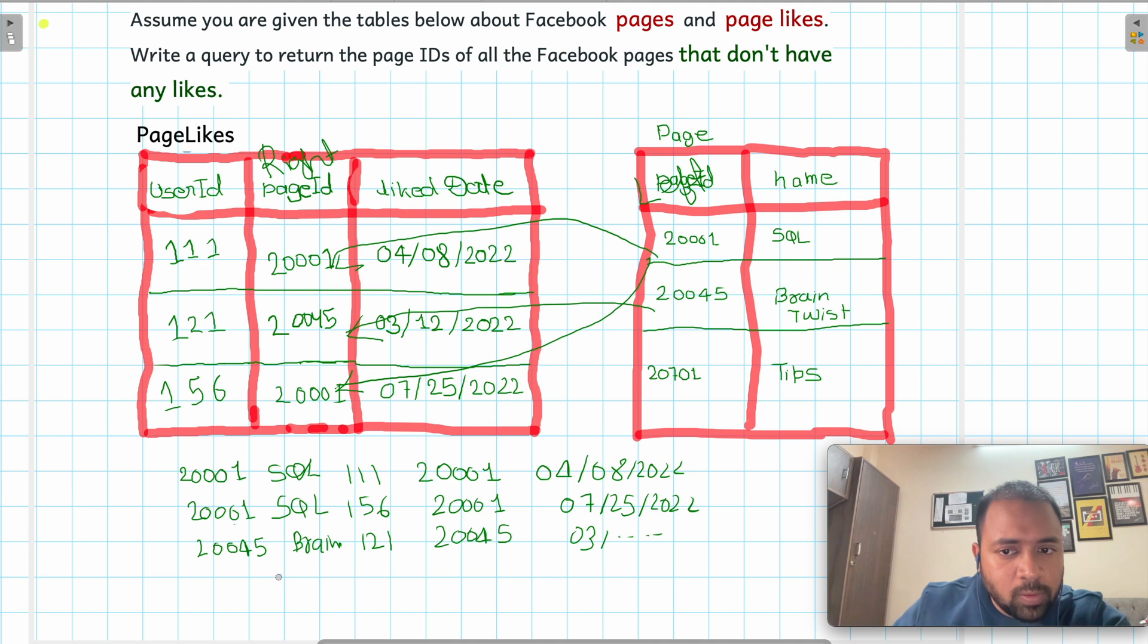Then 20701, Tips. Okay, this comes from the left table; it does not have any matching record in the right table, so it will have null, null, null. Perfect. So let me write the column names also: this is page_id, this is name, this is user_id, this is again page_id, and this is like_date.